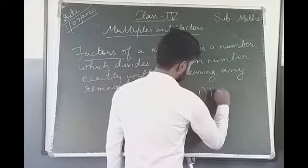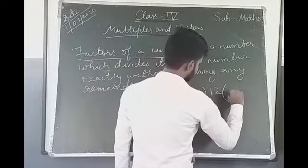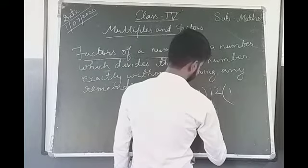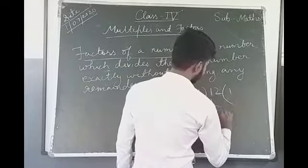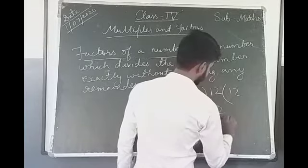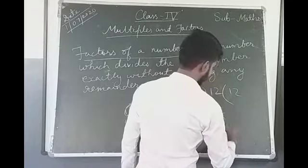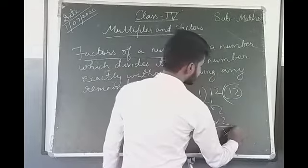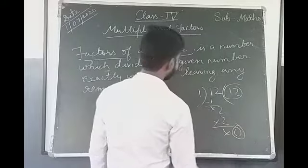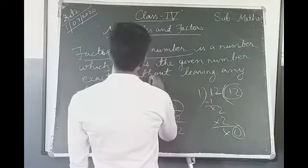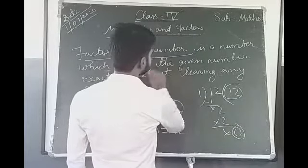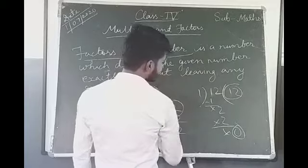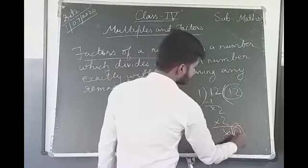Suppose 12 divided by 1. It is exactly divisible and 0 is the remainder. So without leaving any remainder means the remainder is 0.